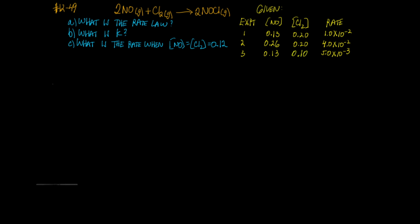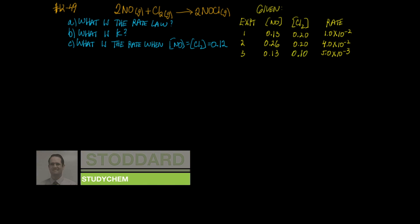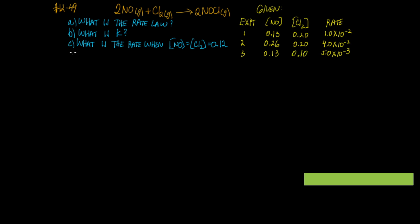Here's another similar type of problem to the previous one, number 48. This is chapter 12, number 49 from McMurray's textbook. We've got this chemical reaction, reaction rate data, and a few questions to answer. What we want to do first in part A is find two experiments where only one concentration is changing.